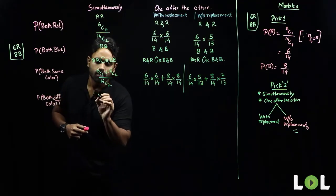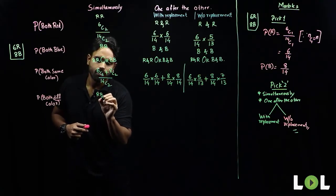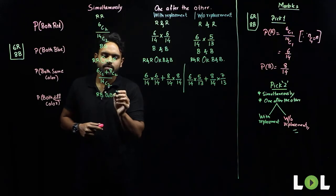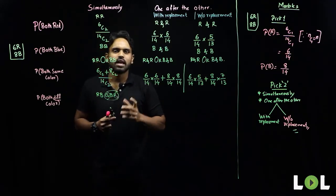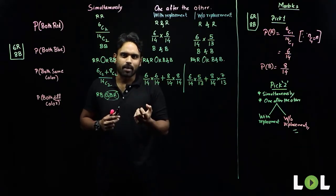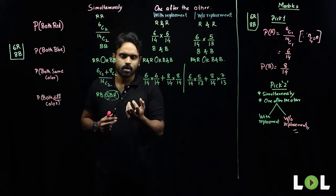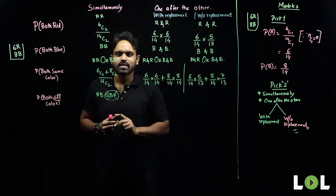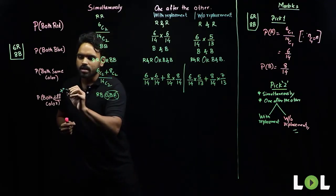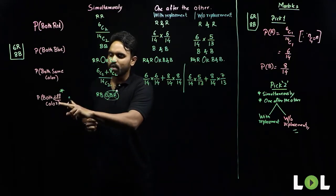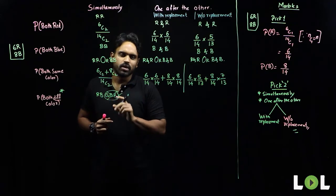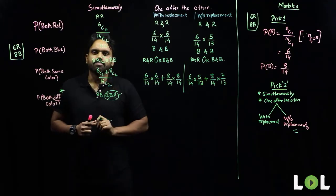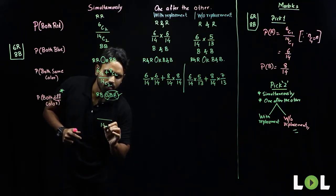Now, probability of both different color. Some might say red and blue OR blue and red — but this is wrong for the simultaneous case. When picking two marbles simultaneously from a bag, if you picked a blue and a red marble, is there any difference between blue-and-red and red-and-blue? No — both cases are the same. So in the simultaneous case, when both different colors are there, red and blue, or blue and red, both combinations are one and the same.